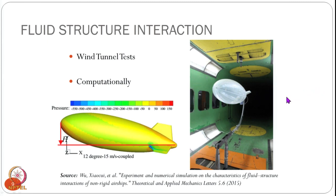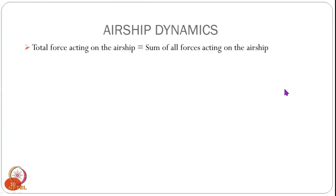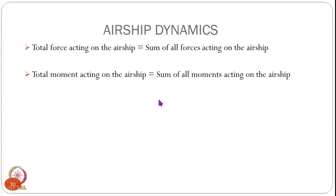Now let us look at the airship dynamics model. We use a Newton-Euler approach: we take all forces, add them together, and that gives the total force acting on the airship. Similarly, we sum all moments acting on the airship. This includes forces from rigid body coupling, aerodynamics, buoyancy, and gravity — we cover everything and add all forces and moments to get the total force and total moment.